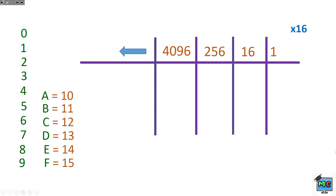We've done 22 and 27 — let's try a bigger number: 163. The first thing we need to do is find the column closest to 163 without going over. Can we use the 256 column? No, too big. So we go down to the 16 column.